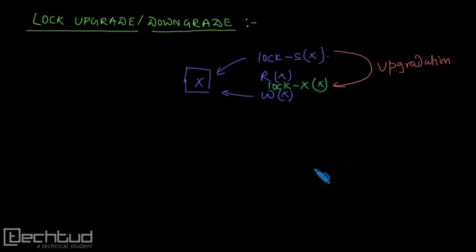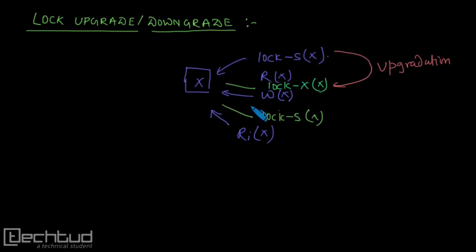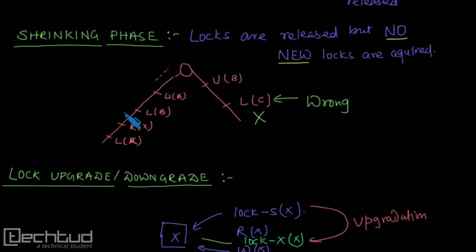Similarly, after this write is over, if another transaction wants to perform a read on data item X, it won't be allowed because it is exclusively locked. So what we do in 2PL is we can downgrade the lock. Downgrading means after the write operation is done, we do a lock-shared (S) — we downgrade the lock on this data item — and then other transactions can perform a read. This is called lock upgrade and downgrade.